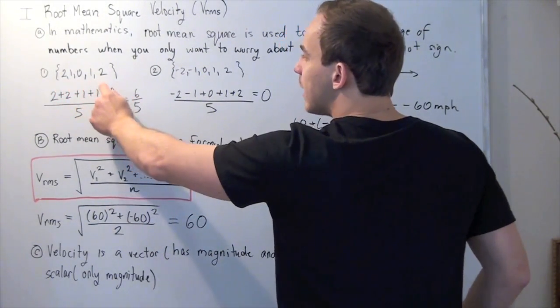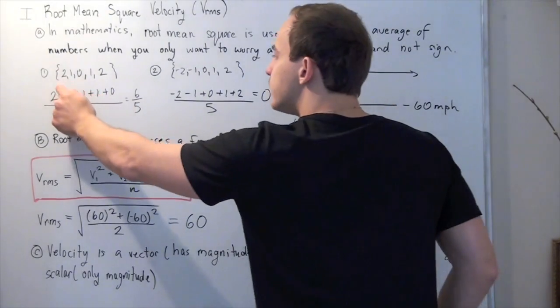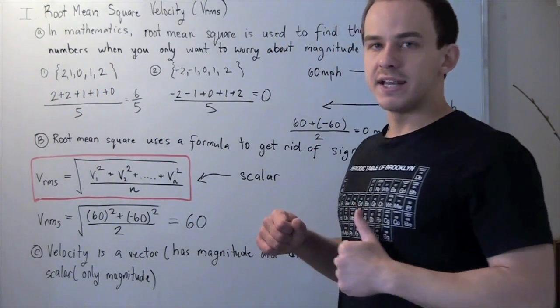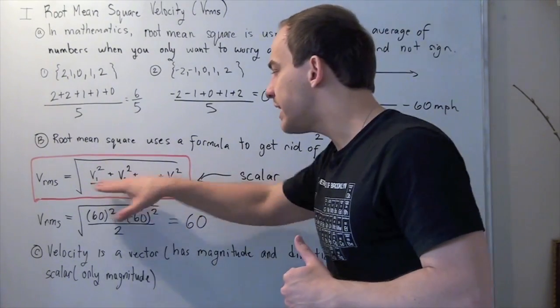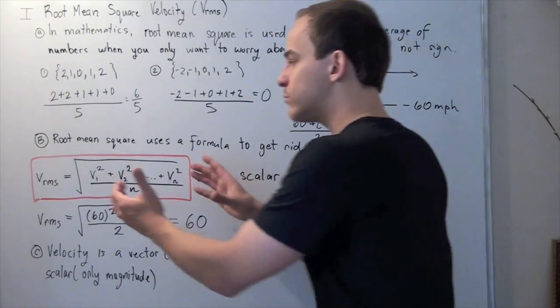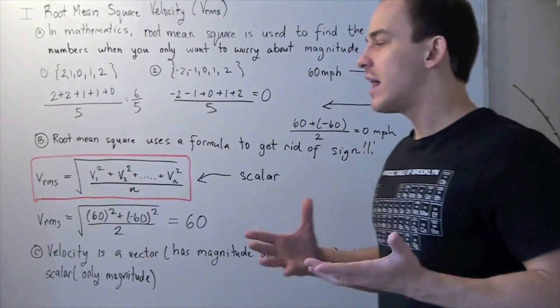So almost the same thing as you did here, except you square every value. The reason you square every value is because a square will take away that negative sign. And then you divide by n, and you take the square root of that. So this will always give you a positive value.